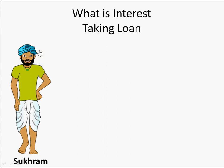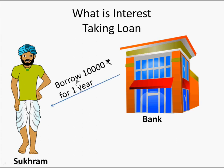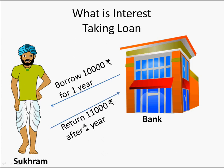Sukram needs to take a loan — for example, to buy some seeds or something for his farm. He wants to borrow money, so he goes to a bank. We know a bank is a place where you can deposit money or take loans. He goes to a nearby bank and says, 'Hey bank manager, can you give me a loan?' The bank manager says, 'Sure, how much do you want?' He says, 'I need to borrow 10,000 rupees for one year to use in my farm.'